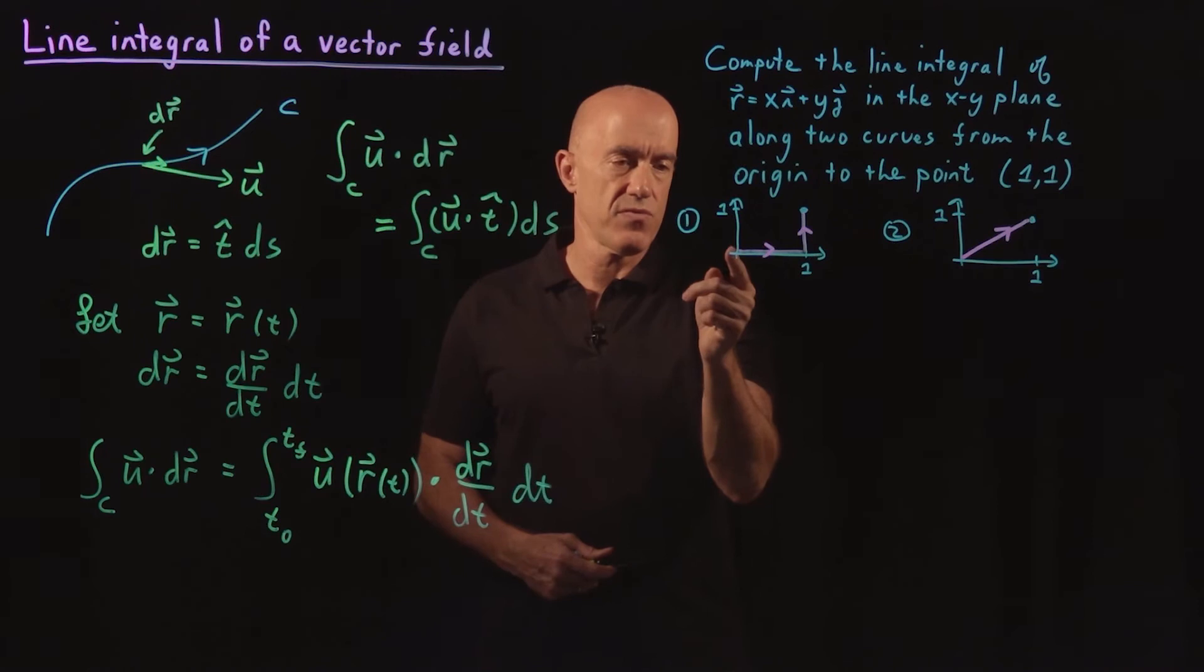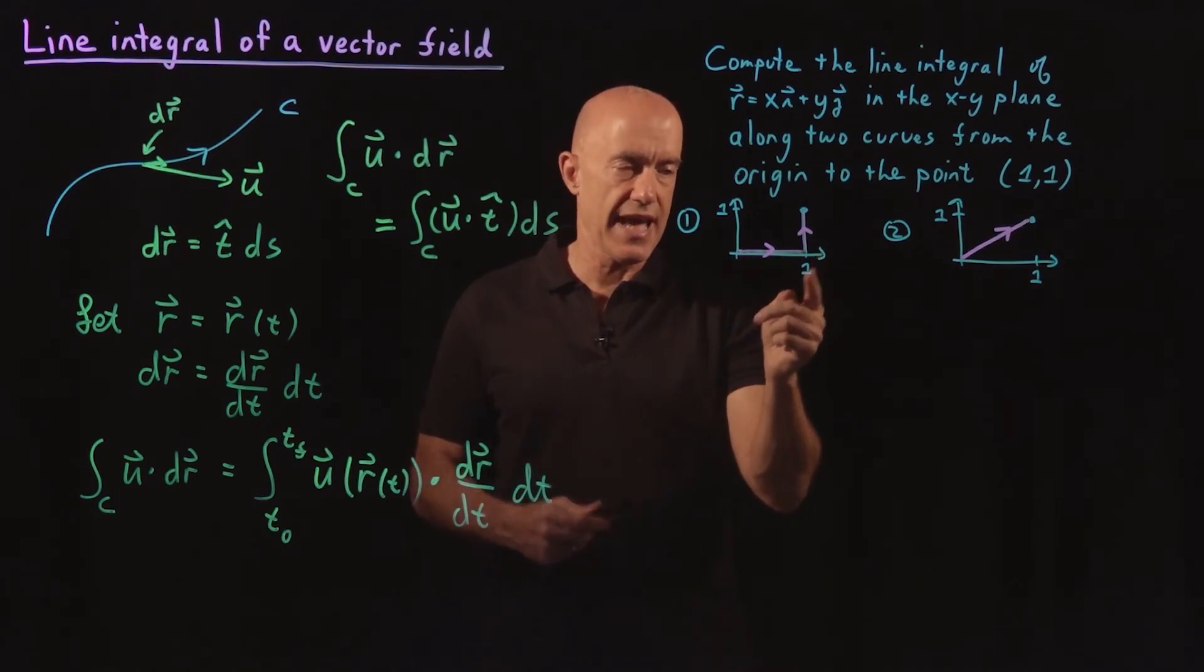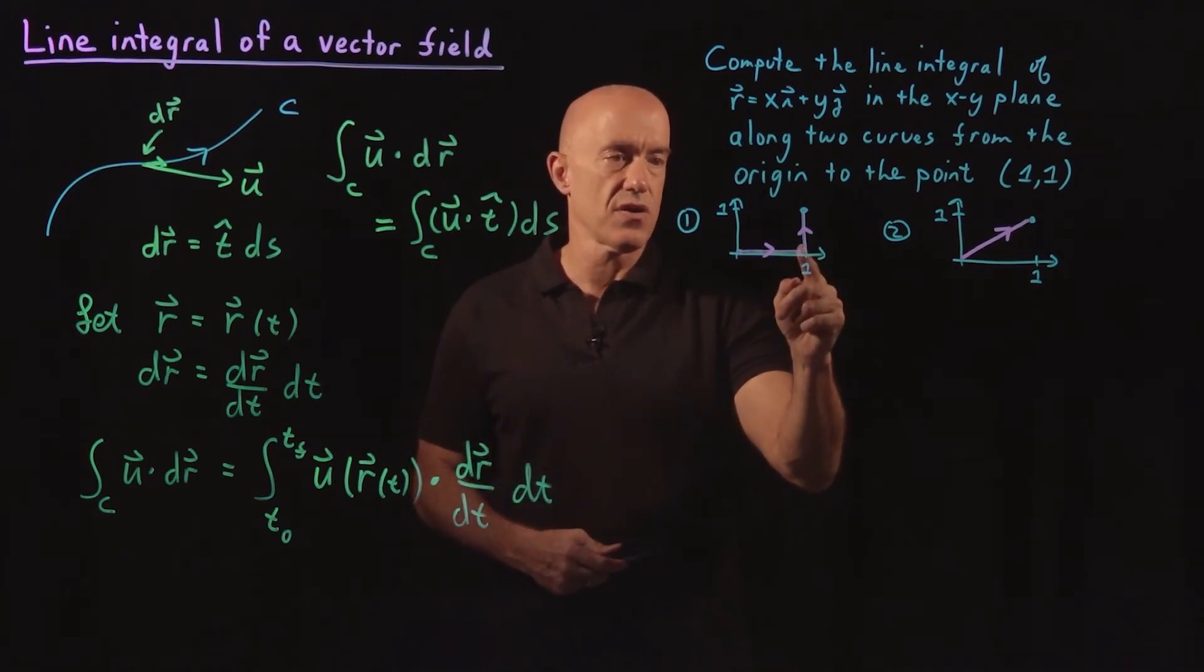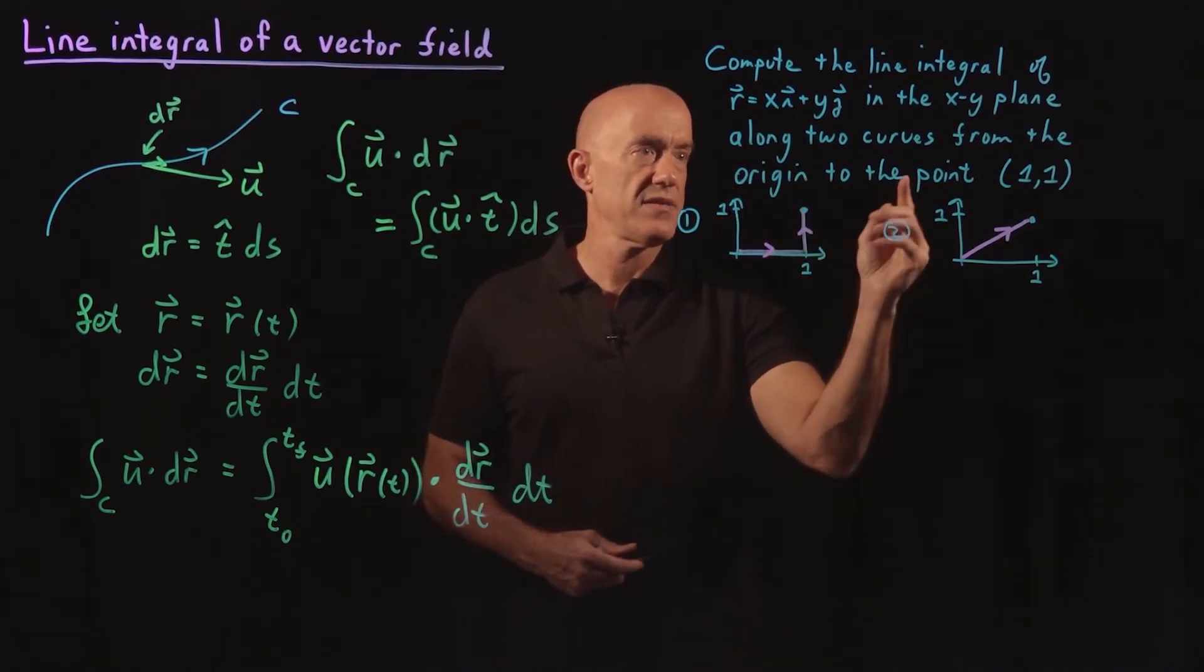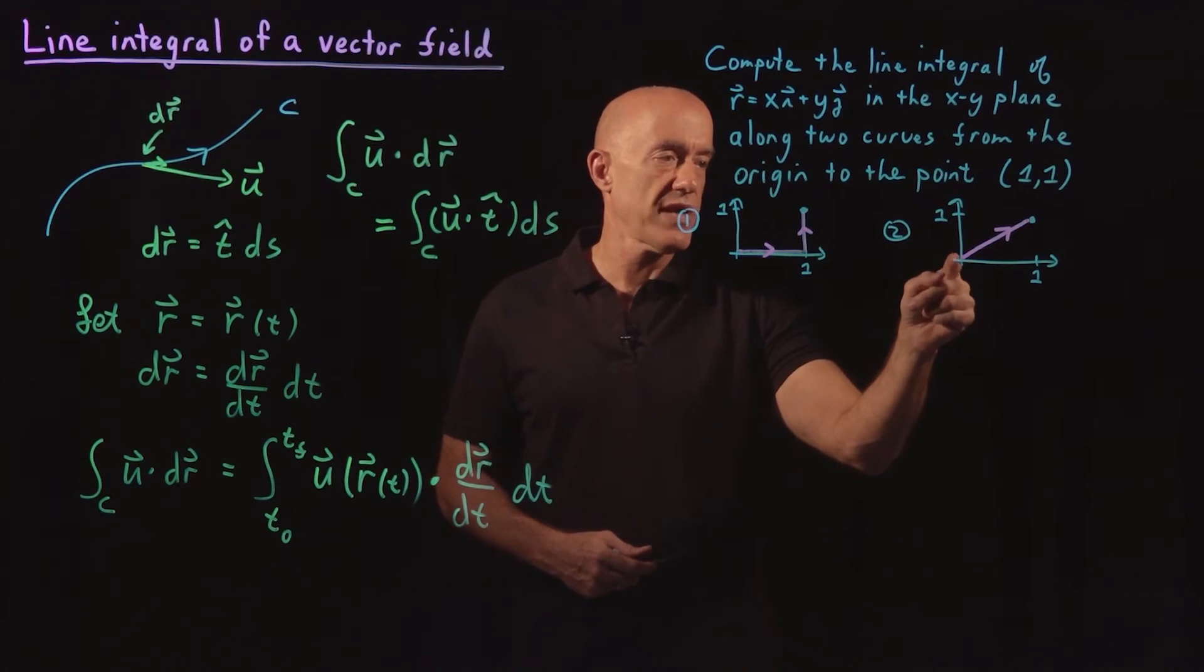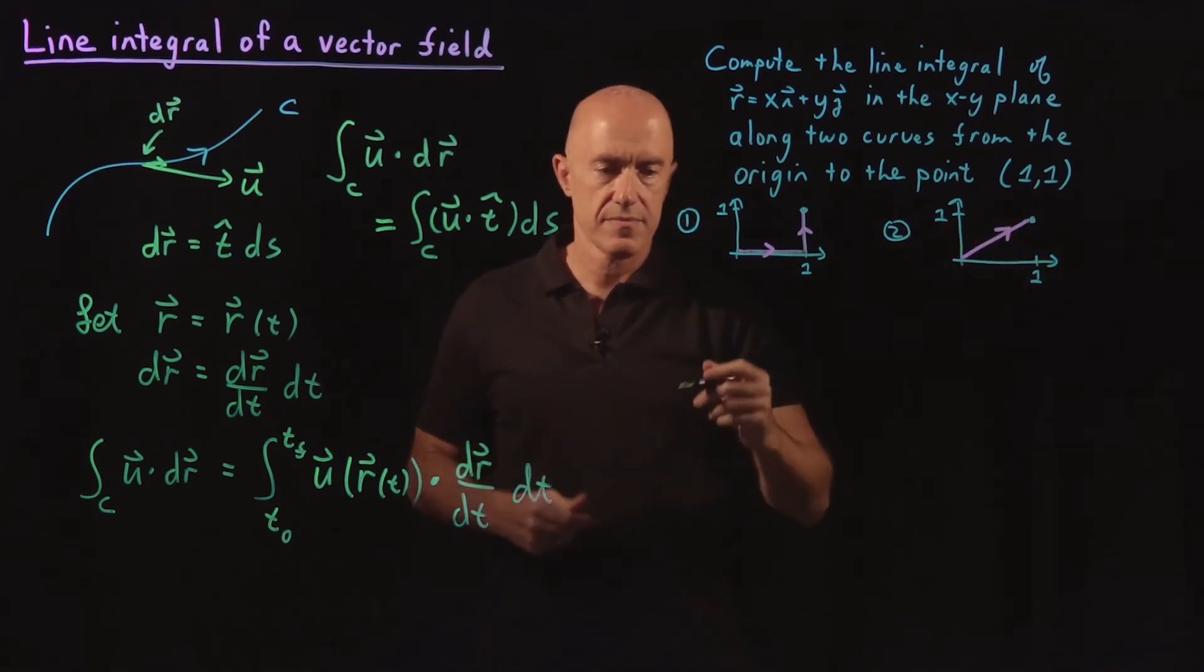In the first curve, we're going to go first along the x axis, and then along the y axis to get to (1,1). In the second curve, we're going to go directly from the origin to the point (1,1).